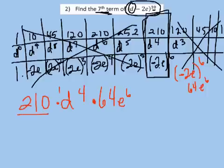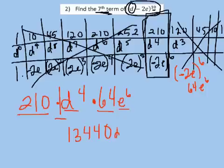Multiply coefficients. 210 times, you can imagine there's a 1 there, times 64. That's going to be 13,440. And then d to the 4, e to the 6. D to the 4, e to the 6. And that's just your answer.